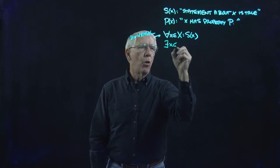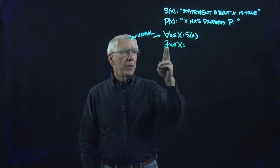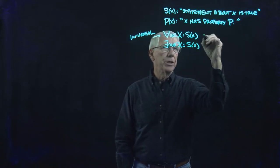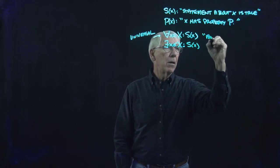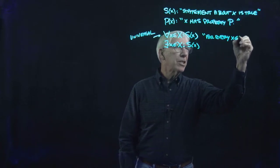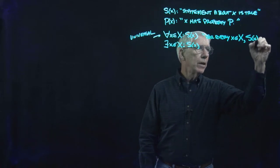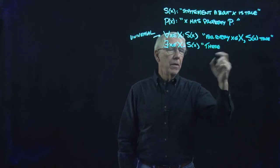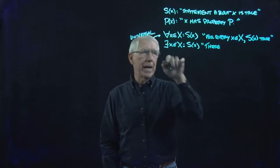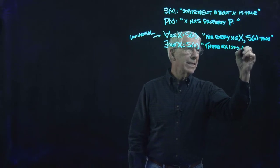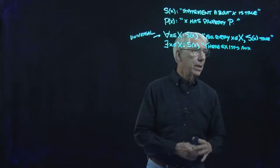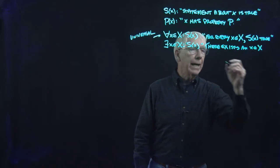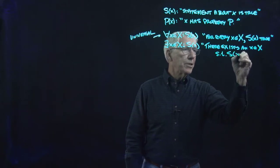Then we have the existential quantifier, which says there exists an X, such that S(X). So this would say: for every X in capital X, S(X) is true. The existential form says there exists an X, an element of capital X, such that S(X) is a true statement about it.